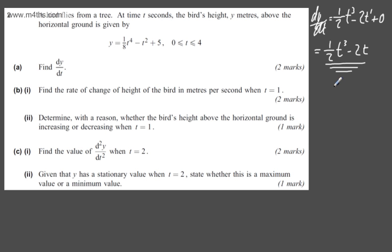In part (b), the first part for two marks asks us to find the rate of change of height of the bird in meters per second when t is equal to 1. We can state when t equals 1, dy/dt will be equal to one-half of 1 cubed minus two lots of 1. That's going to give me one-half minus 2, which will give me negative 3 over 2, which will be minus 3 over 2 meters per second.